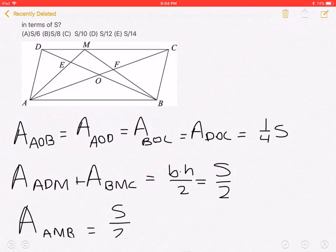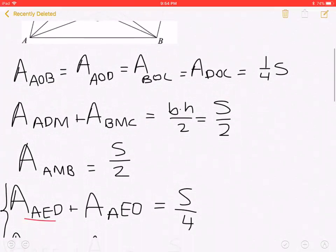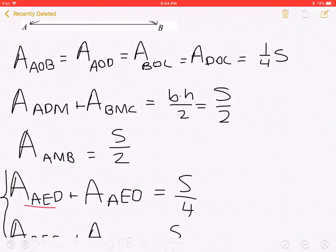Area of ADM plus area of BMC is equal with base times height over 2, which is equal to S over 2. We get from here that the area of AMB is equal with S over 2.